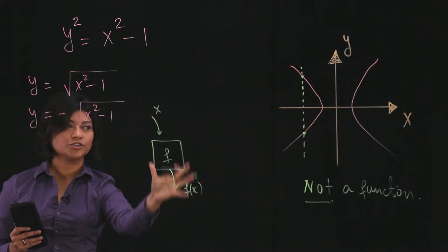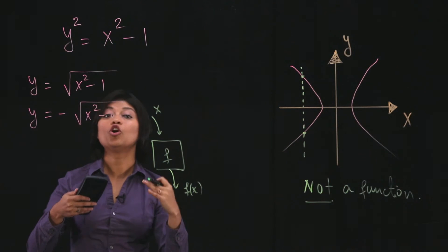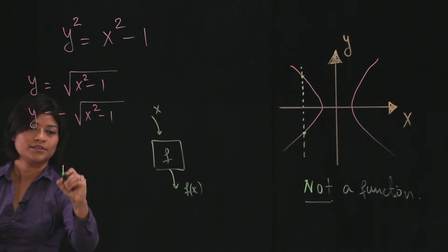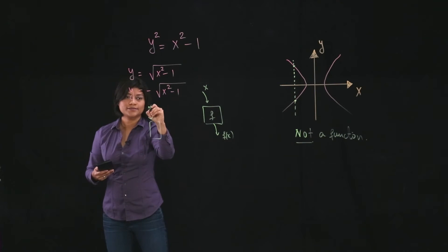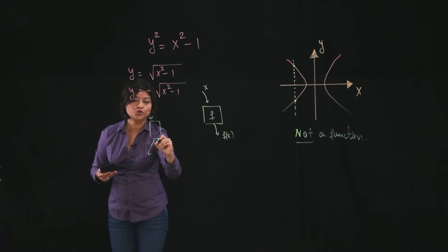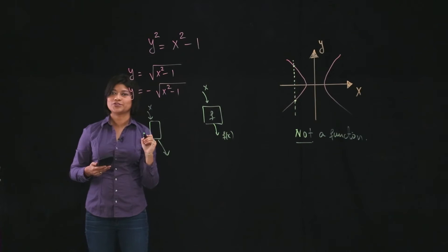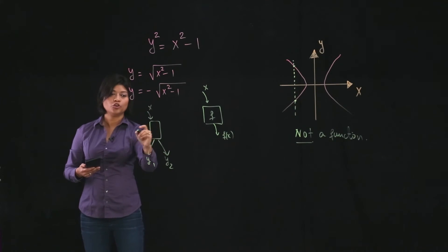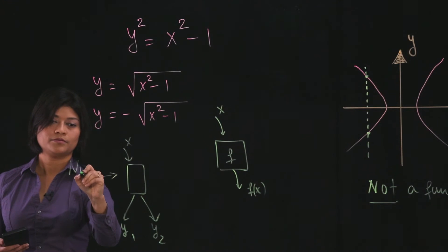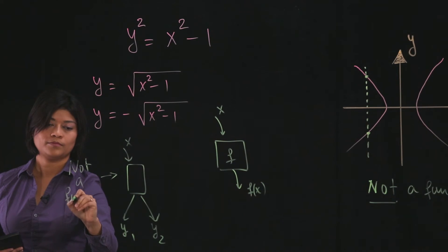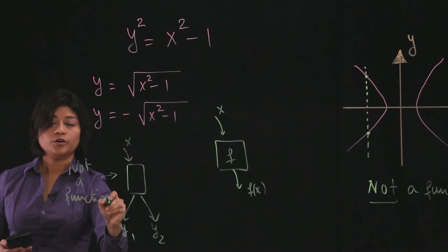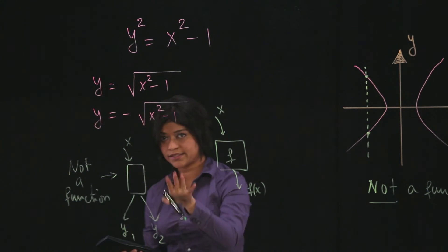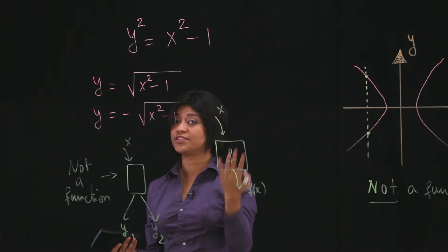This is what the structure of a function is. So when will it not be a function is if this happens. You input x, and you get, say, two different outputs. Then that is not a function.